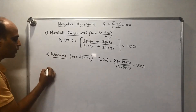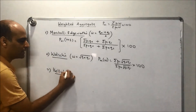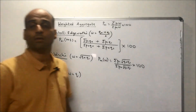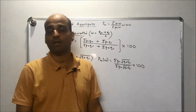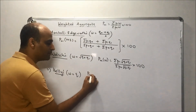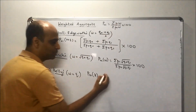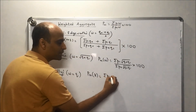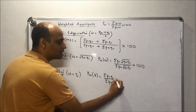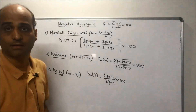Last in the group is Kelly's index. In Kelly's index, the weightage is q — a quantity lying between the base year and the current year quantity. The formula is: summation p1·q upon summation p0·q, multiplied by 100.